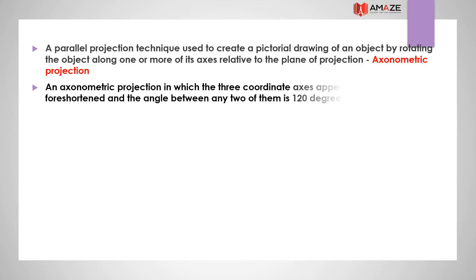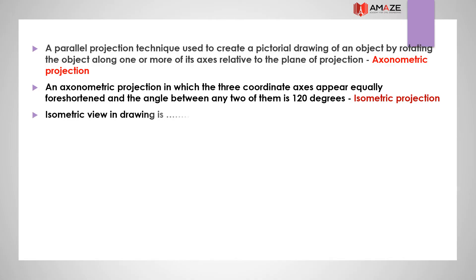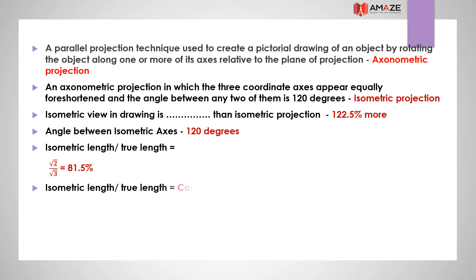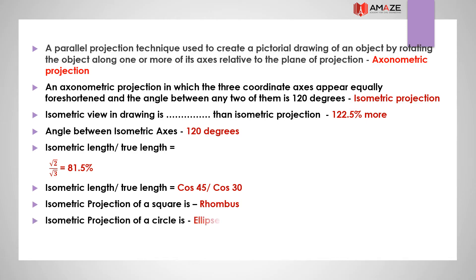An axonometric projection in which the three coordinate axes appear equally foreshortened and the angle between any two of them is 120 degrees is called isometric projection. The isometric view in a drawing is 122.5% more than the isometric projection. The isometric length to true length ratio is √2/√3, which is cos45°/cos30°, equal to 81.5%. The isometric projection of a circle is an ellipse.